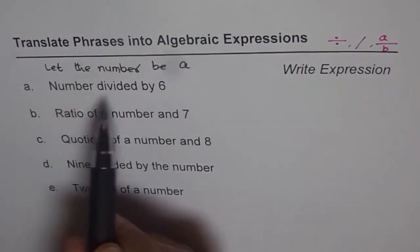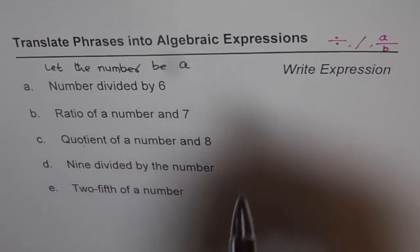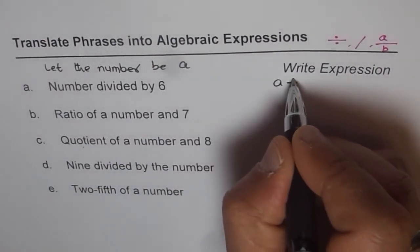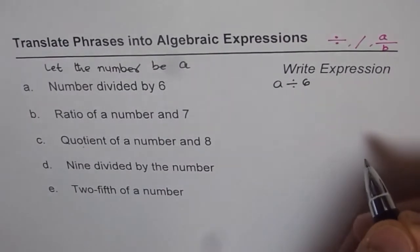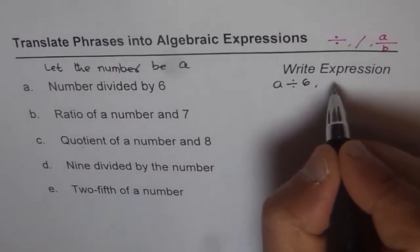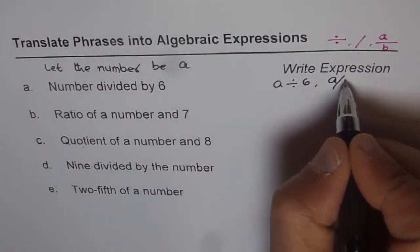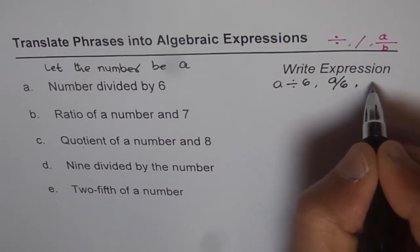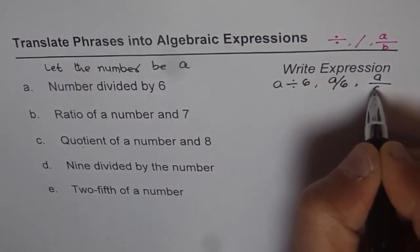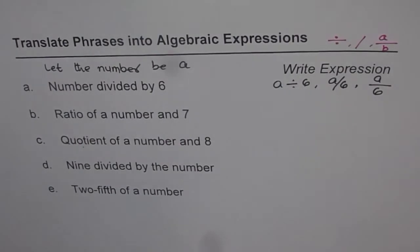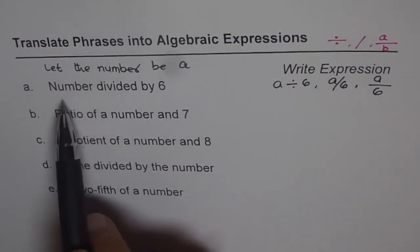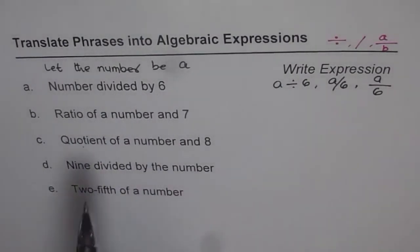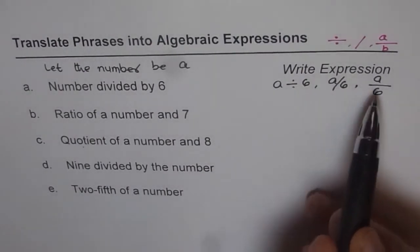So when we say number divided by 6, that means a is divided by 6. That is one way of writing. You could also write this as a divided by 6, or also as a divided by 6. All are correct ways of writing this sentence. Number divided by 6. Do you understand? So that is an algebraic expression.